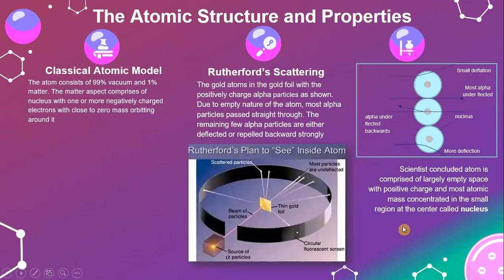The atomic structure and its properties. In the classical atomic model, the atom consists of mostly empty space. The model describes a nucleus with one or more negatively charged electrons with close to zero mass orbiting around it.